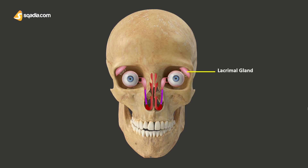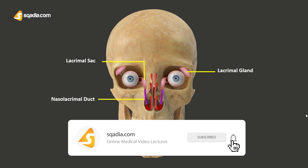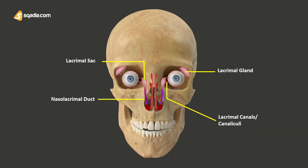It supports the lacrimal sac, which is the upper dilated end of the nasolacrimal duct, and is lodged in a deep groove formed by the lacrimal bone. It also supports the lacrimal canaliculi, or the lacrimal canals, which are the small channels in each eyelid that drain the lacrimal fluid from the lacrimal puncta to the lacrimal sac. This forms part of the lacrimal apparatus that drains the lacrimal fluid from the surface of the eye towards the nasal cavity, and this is how the lacrimal bone makes up the nasolacrimal canals.